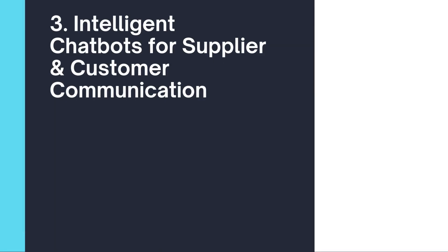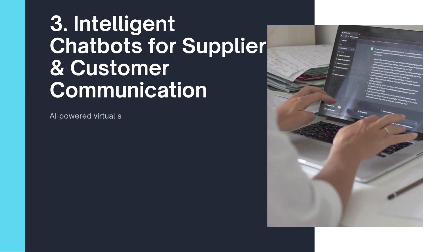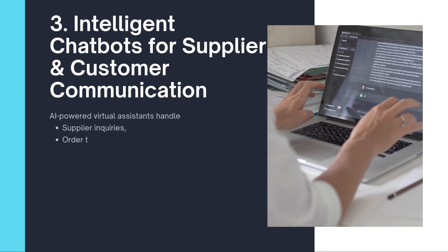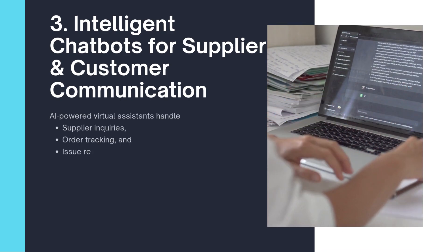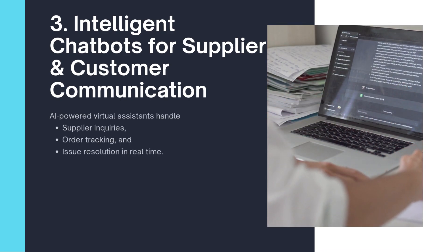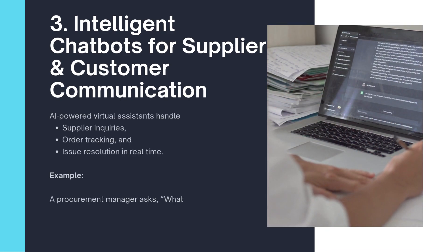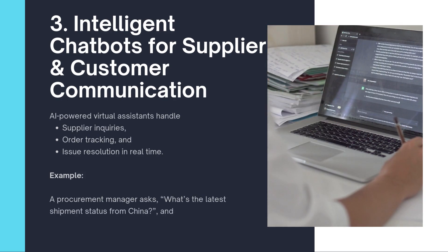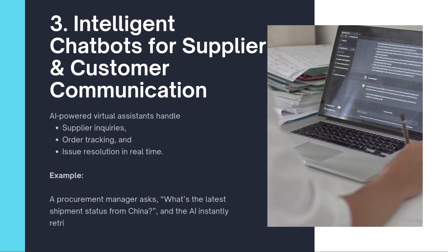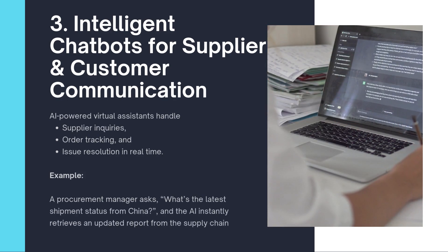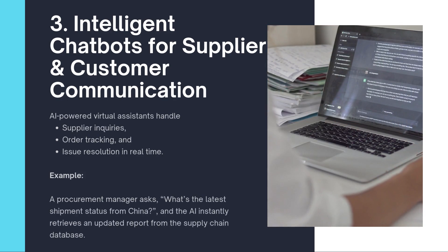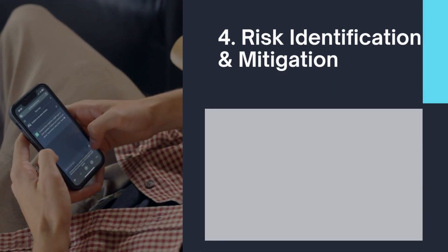Three: intelligent chatbots for supplier and customer communication. AI-powered virtual assistants handle supplier inquiries, order tracking, and issue resolution in real-time. Example: a procurement manager asks, 'What's the latest shipment status from China?' and the AI instantly retrieves an updated report from a supply chain database.